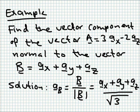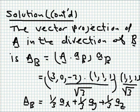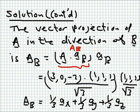We have one more example: find the vector component of vector A = 3Ax - 2Az, normal to vector B = Ax + Ay + Az. To get the projection of a vector in the direction of another vector, we first get the unit vector in the direction of B by dividing B by its length. Since B has all coefficients equal to 1, its length is sqrt(3). Then we take the dot product between vector A and this unit vector, giving the scalar length of the projection of A in the direction of B.